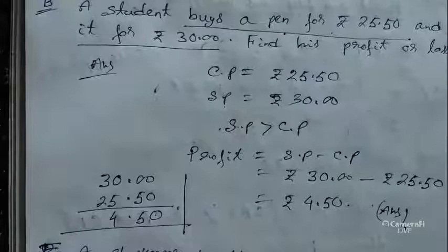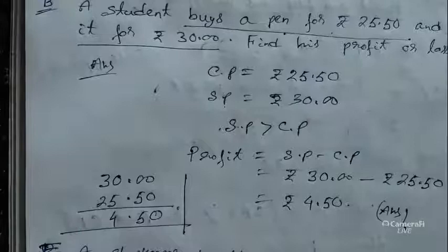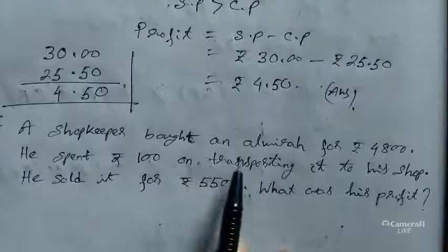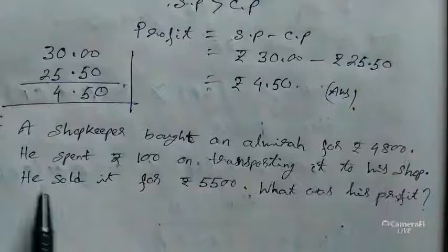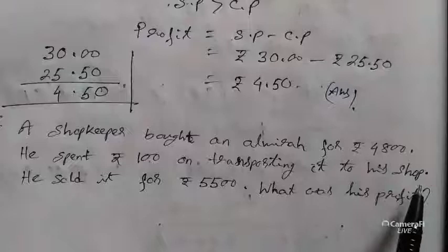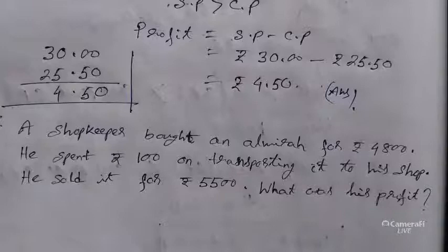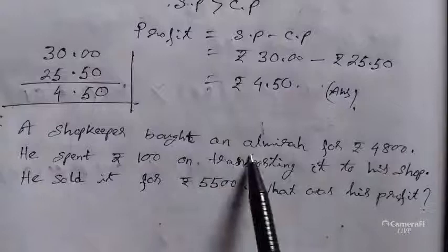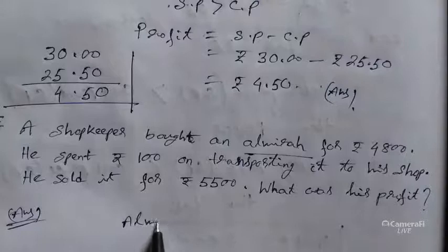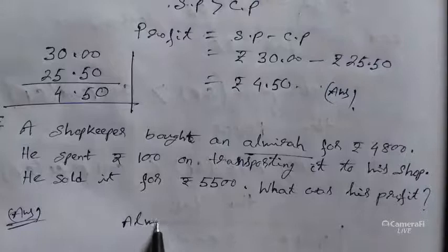Now coming to another word problem. The question is: a shopkeeper bought an almira for rupees 4,800. He spent rupees 100 on transporting it to his shop. He sold it for rupees 5,500. What was his profit? Note down: almira cost is rupees 4,800.